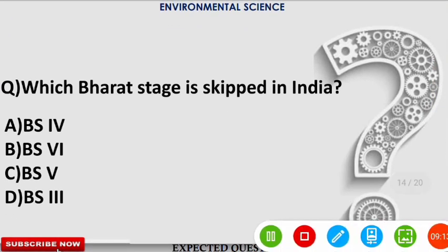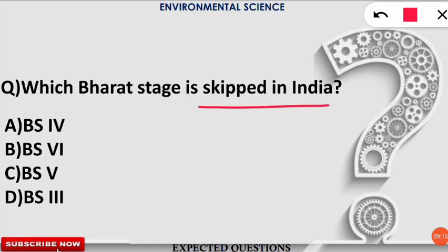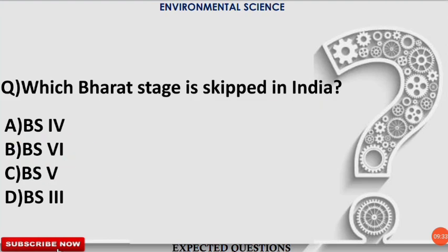The next question: which Bharat Stage (emission standard for automobiles) is skipped in India? The correct option is C — Bharat Stage 5 was skipped. India moved directly from Bharat Stage 4 (BS4) to Bharat Stage 6 (BS6).